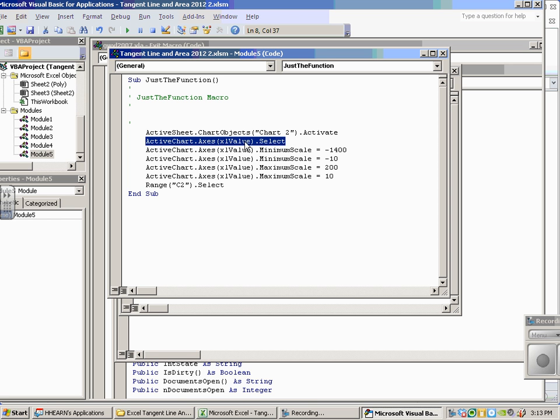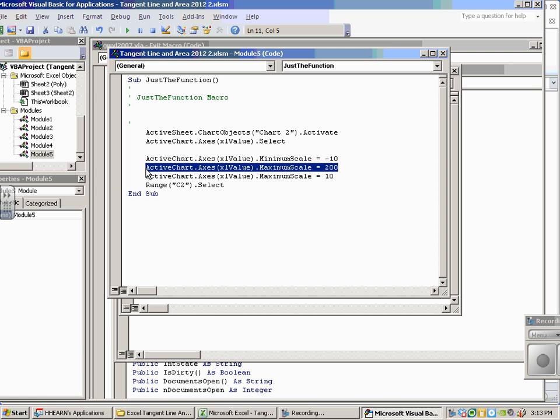And then I selected, this is the y-axis, XL value is the y-axis. It tells me it was at negative 1,400 for the minimum. I don't care about that. Deleting it.